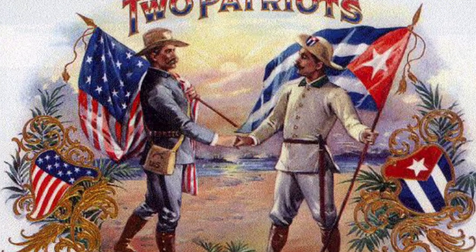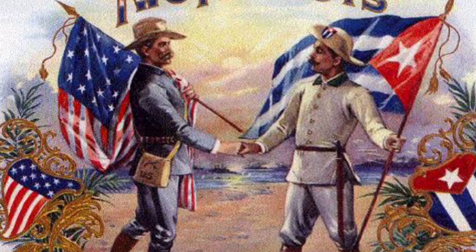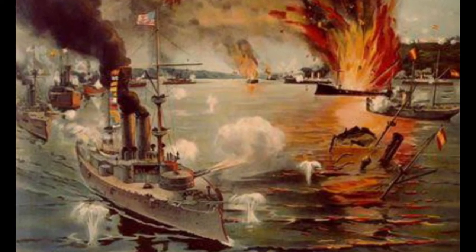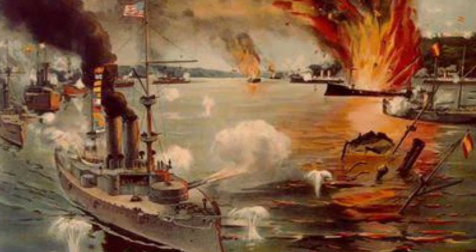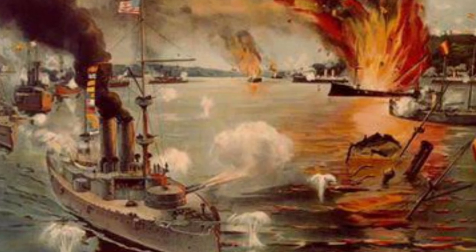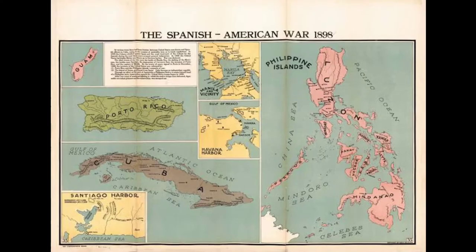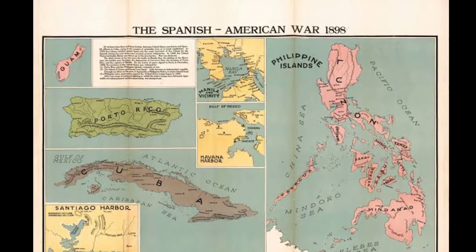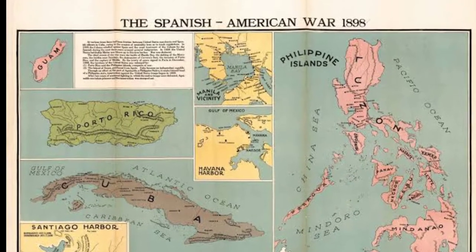The ensuing war was pathetically one-sided, since Spain had readied neither its army nor its navy for a distant war with the formidable power of the United States. In the early morning hours of May 1, 1898, Commodore George Dewey led a U.S. naval squadron into Manila Bay in the Philippines. He destroyed the anchored Spanish fleet in two hours before pausing the Battle of Manila Bay to order his crew a second breakfast. In total, fewer than 10 American seamen were lost, while Spanish losses were estimated at over 370.